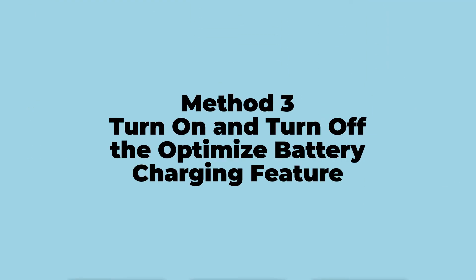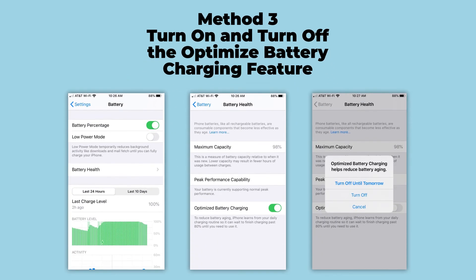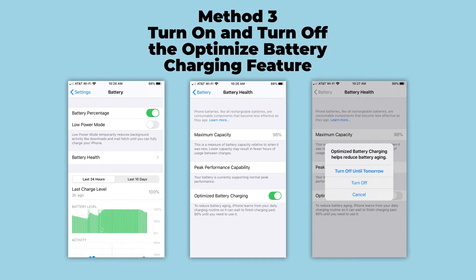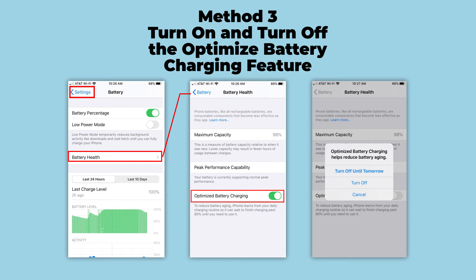Method 3: Turn on and turn off the optimize battery charging feature. If the two methods above cannot fix the flash disabled issue, you can try to turn on and then turn off the optimize battery charging to fix flash is disabled. Just go to Settings, Battery Health, Optimize Battery Charging.